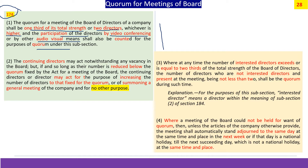If quorum is not met because the number of directors has been reduced below the quorum level — for example if the quorum is five and available people is only four — the meeting cannot be held. In such a case, the board can meet only to increase the number of directors to the level of quorum, or to summon a general meeting for recruitment of additional directors. It cannot conduct any other business; it is a quorum-development meeting to be held by the board.